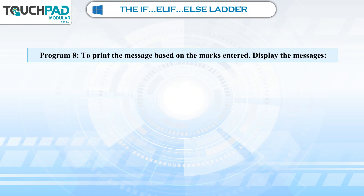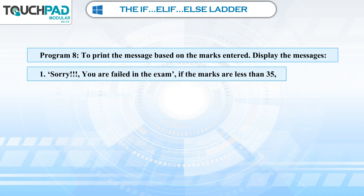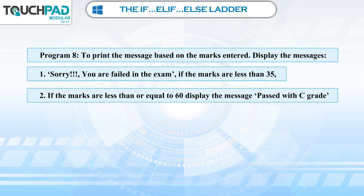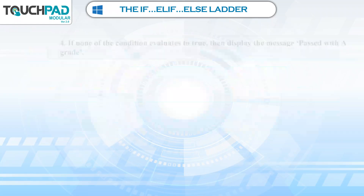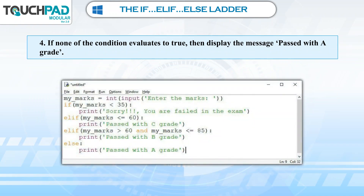Program 8: To print the message based on the marks entered. Display the message 'Sorry, you are failed in the exam' if the marks are less than 35. If the marks are less than or equal to 60, display 'Passed with C grade'. If the marks are greater than 60 and less than or equal to 85, display 'Passed with B grade'. If none of the conditions evaluates to true, display 'Passed with A grade'.